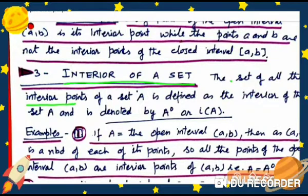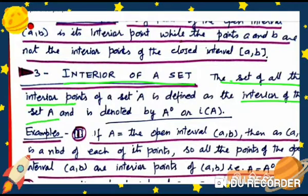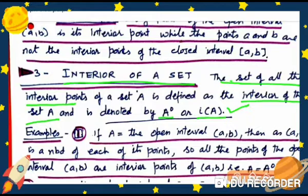Interior of a set: The set of all the interior points of a set A is defined as the interior of set A, denoted by A° (also written as A0 or iA). Different books may use different notations, so you should know the meaning of all these notations.